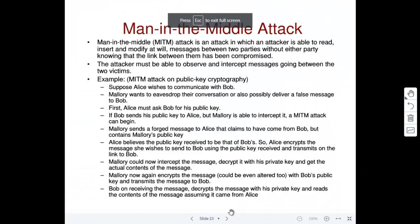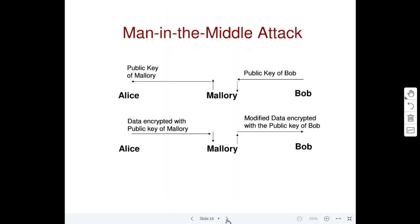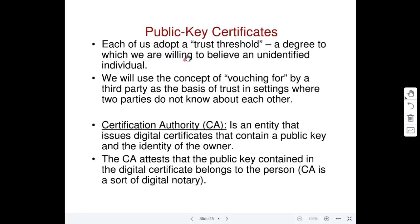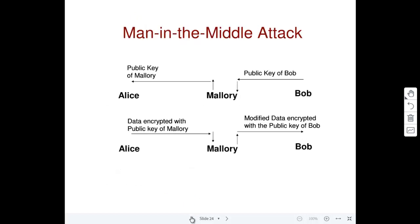Now let us see a very classical attack called the man-in-the-middle attack that was used in earlier days and motivated the idea for developing what is called a public key certificate for each user. There are two genuine users, Alice and Bob, who want to communicate, but Alice does not know the public key of Bob, so she will ask Bob to send his public key. Once she gets Bob's public key, she can encrypt a message with it and send it to Bob, so only Bob can decrypt with his private key. This provides confidentiality.